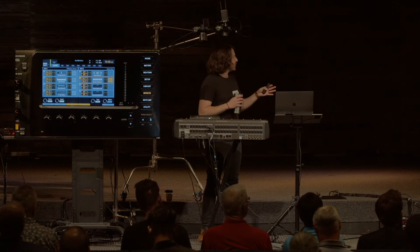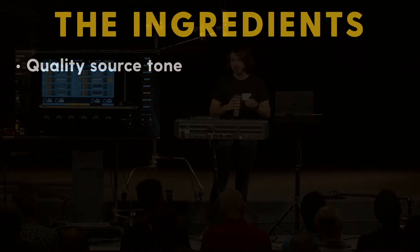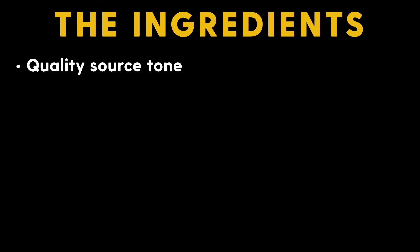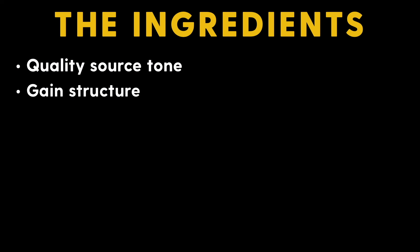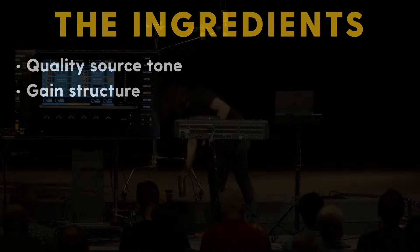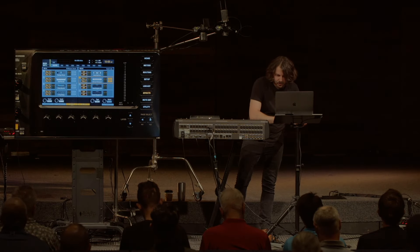In any mix there are certain ingredients, and we've talked through this a little bit. First is getting quality source tone. Say you're making a drum kit — you want to make sure the microphones are placed properly, even that the drums are tuned properly. It's going to make a world of difference just capturing the proper signal. Then we have our gain structure, and I'll actually play a little bit of this multitrack and show you exactly what you're shooting for.